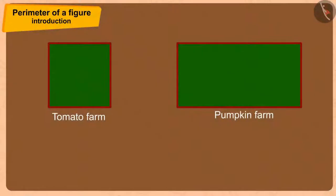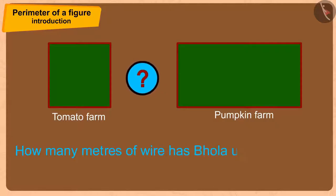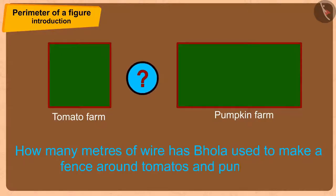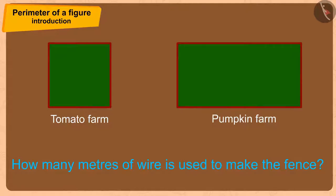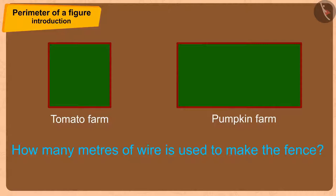If tomatoes and pumpkins have been cultivated in these types of squares and rectangle shapes, can you answer how many meters of wire has Bhola used to make a fence around tomatoes and pumpkins? To estimate the length of the wire used in a fence, we need to find the perimeter of that place.